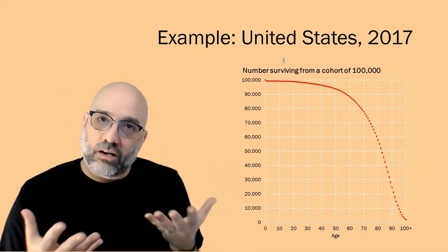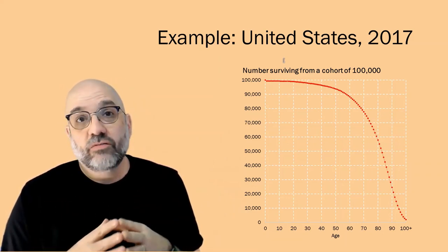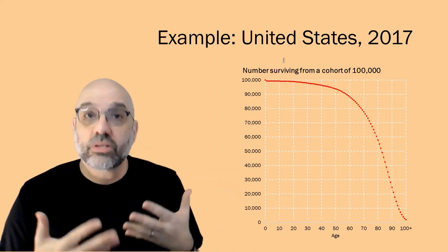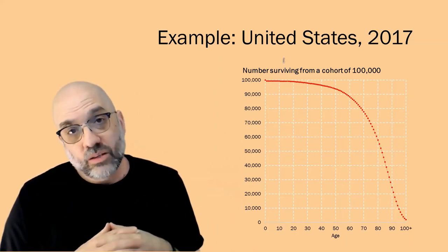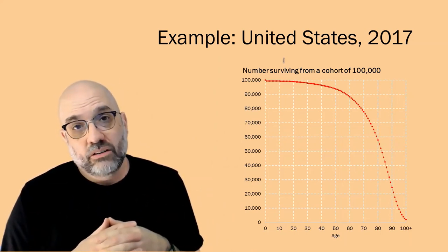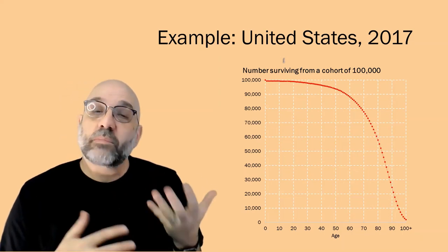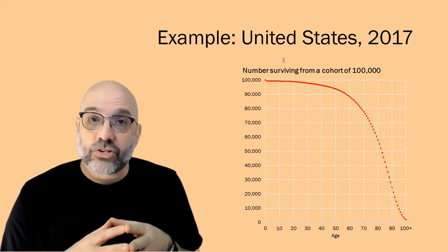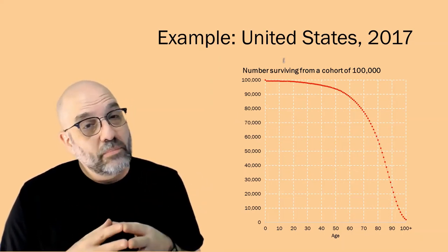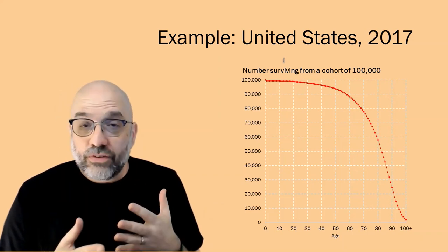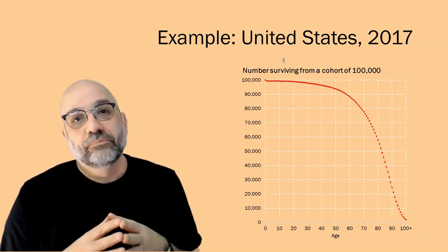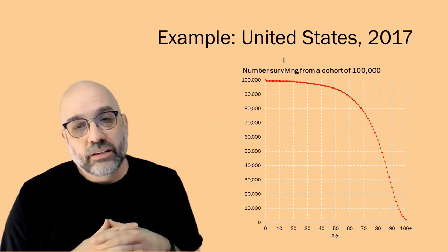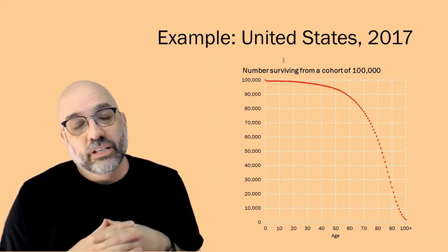So we'll take our hypothetical cohort, 100,000 individuals, and we'll subject them to those observed mortality rates that we saw in the year 2017 in the United States. We lose about a half of one percent in that first year of life, then we don't lose very many more for the next 10 or 15 years, and eventually you see them start to drop off as mortality rates eventually rise.